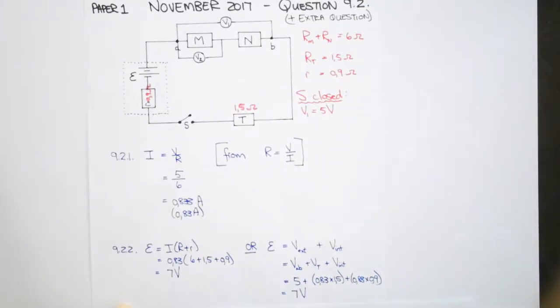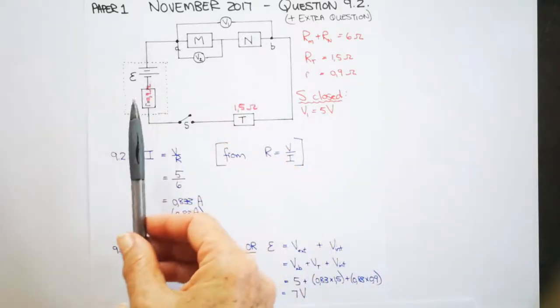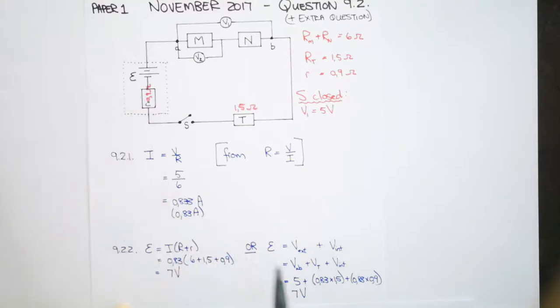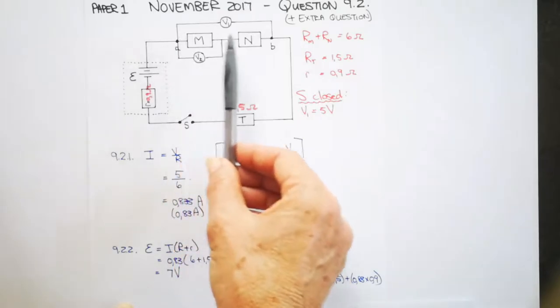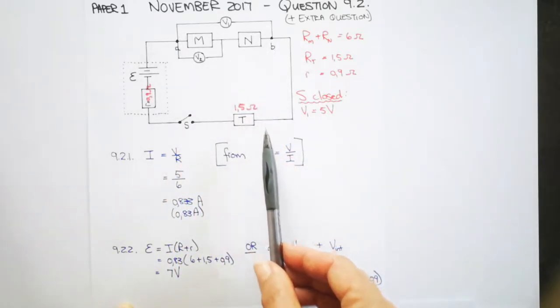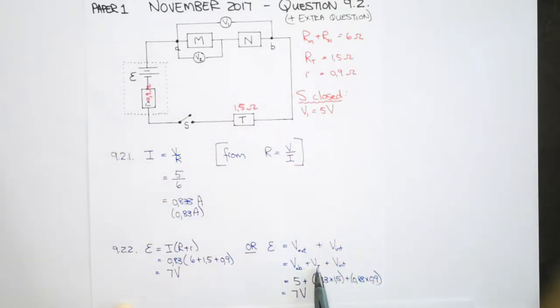Then also, you can use this method where your EMF is the sum of the voltages in your external circuit plus the lost volts. So your external volts—we can call that V-terminal or V-load or V-external—plus your internal voltage, your volts that are lost. So I've taken V-external has got two parts. It's the volts across A, B and the volts across T. Those two together give you the external volts plus your lost volts.